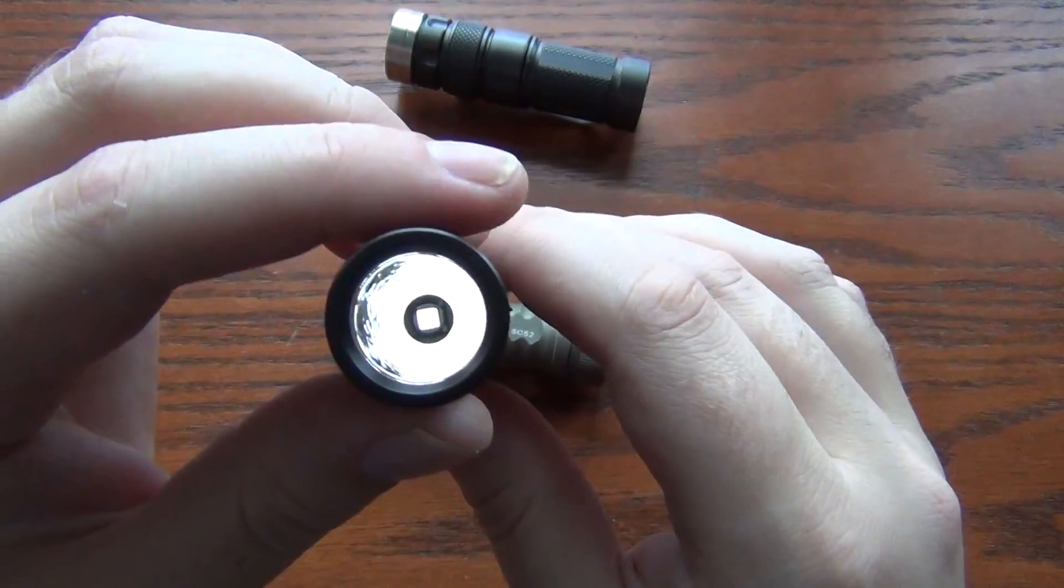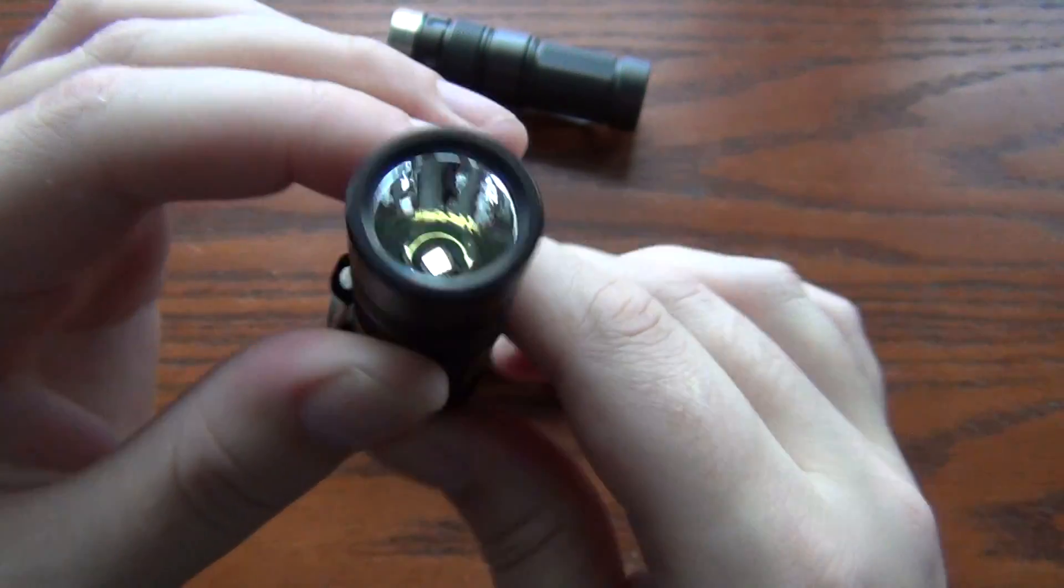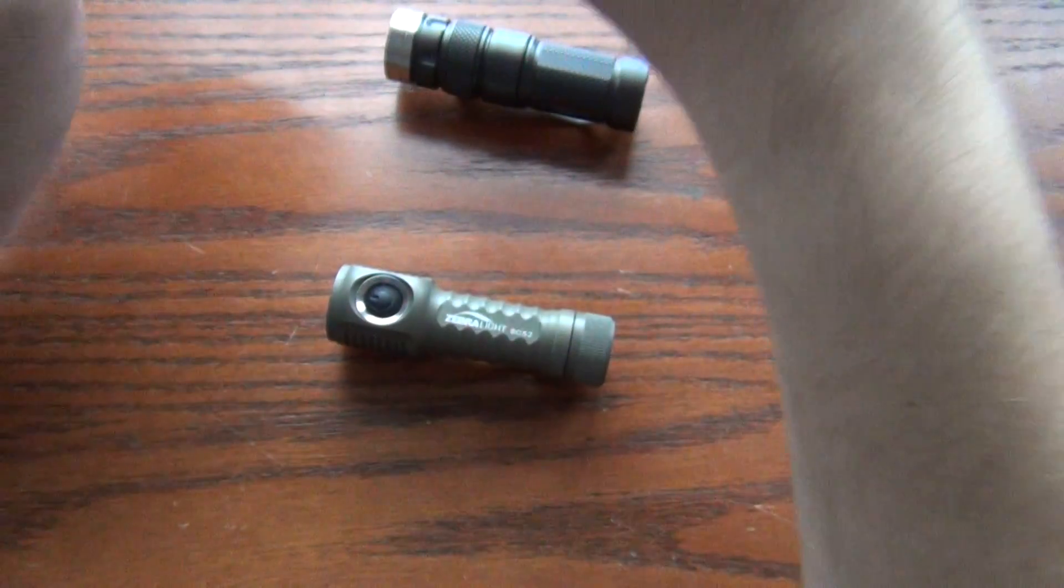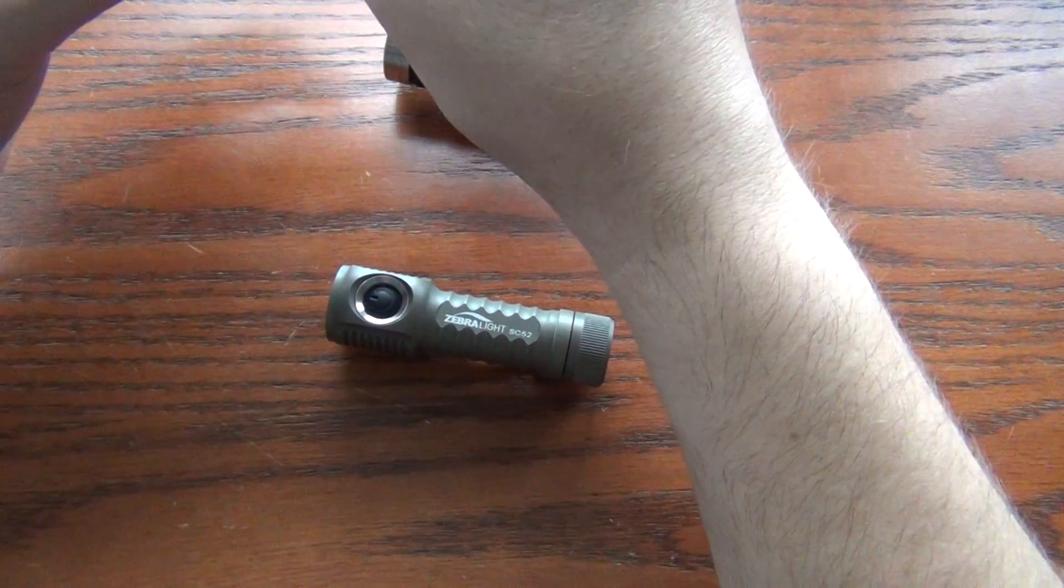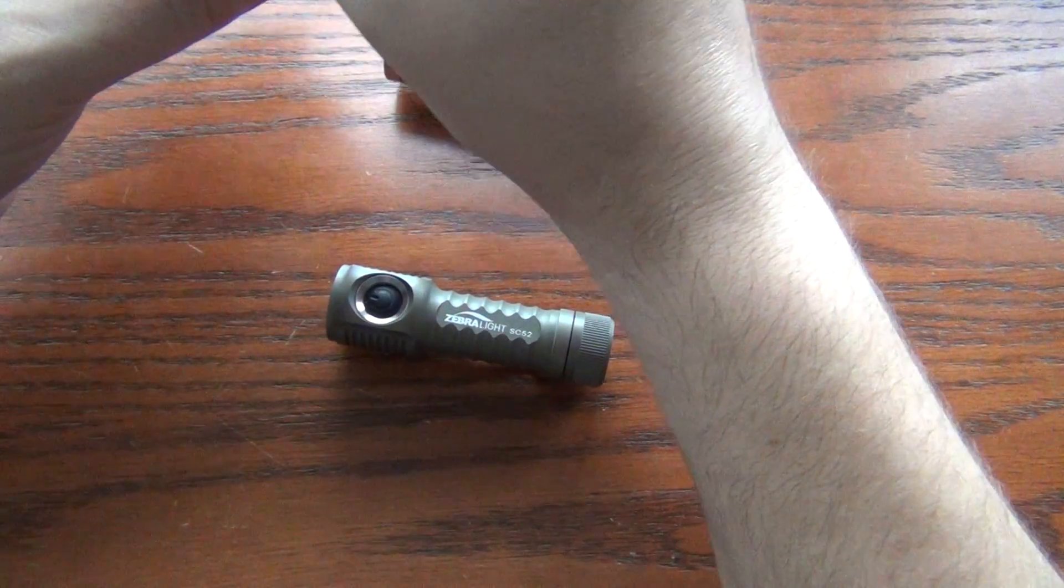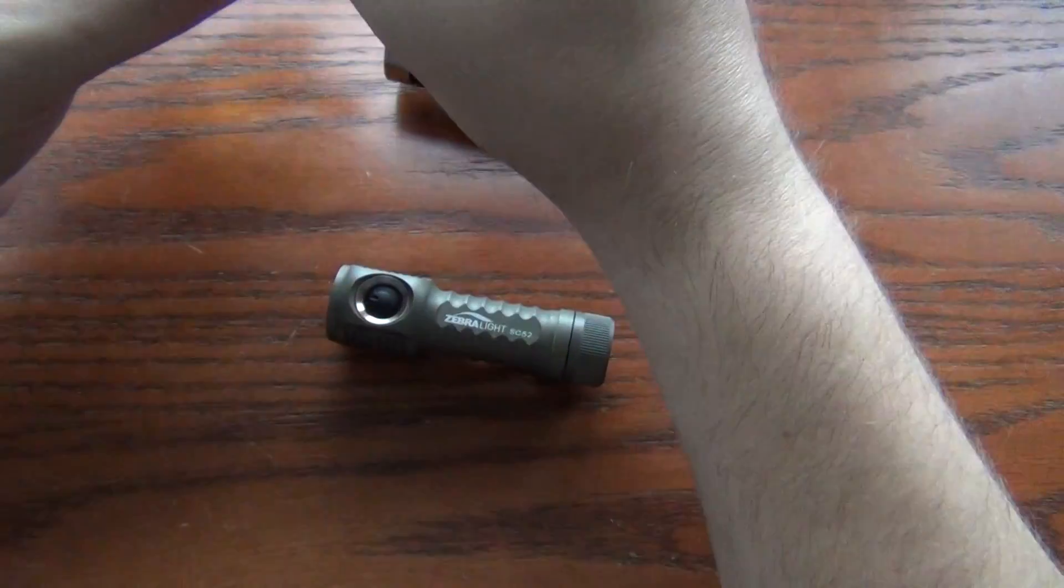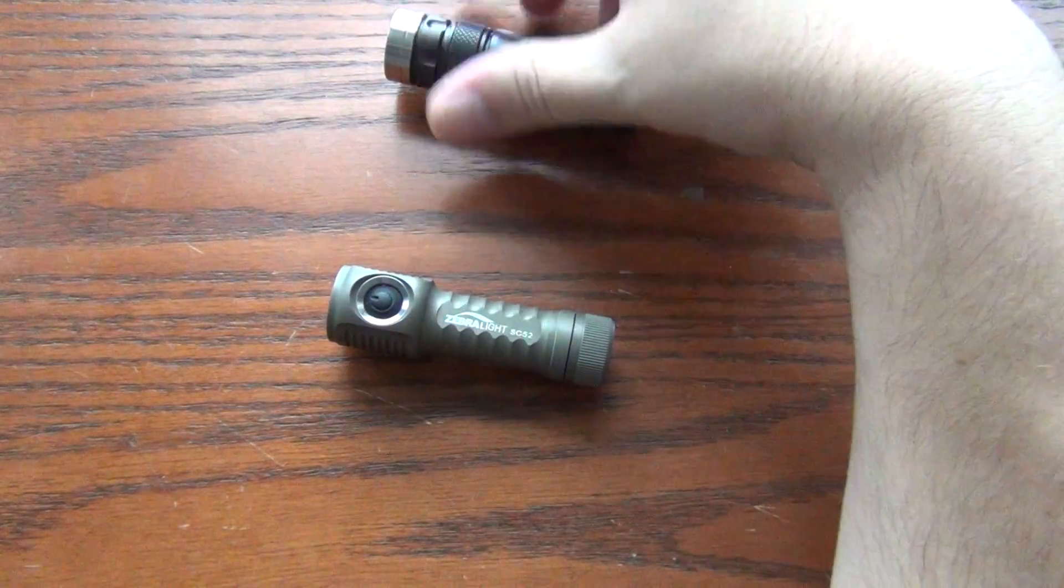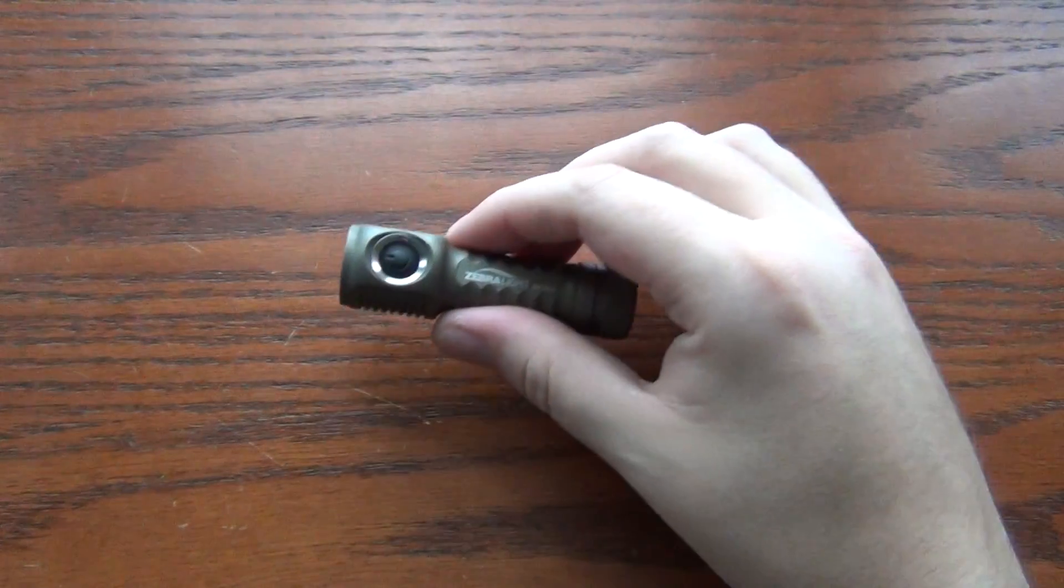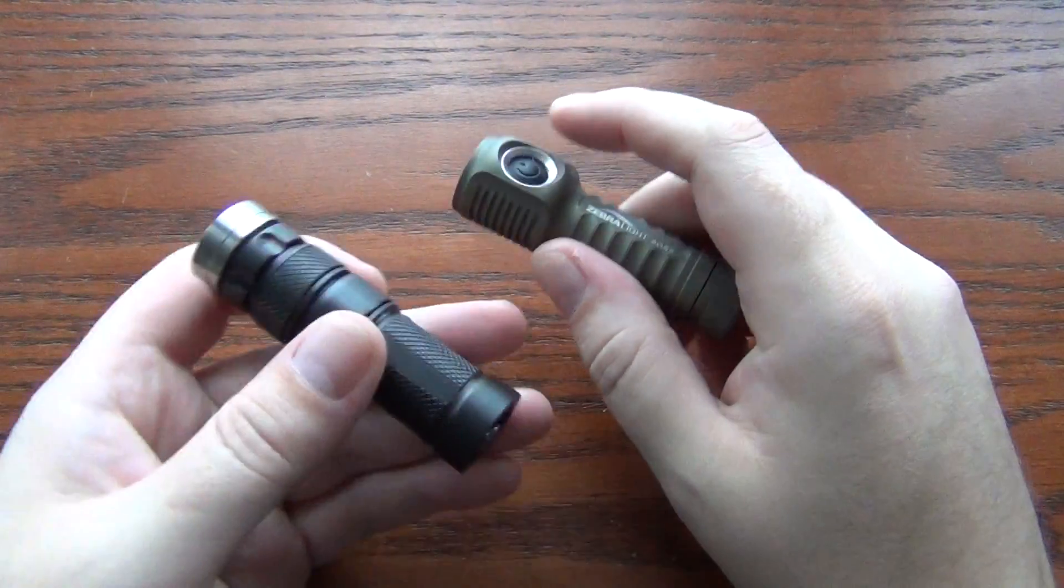Whereas even though this Sunwayman has an orange peel reflector, it does have some rings. You're not going to be able to see it in the video, but you can take my word for it. There are rings in the beam. Oh, one more thing.